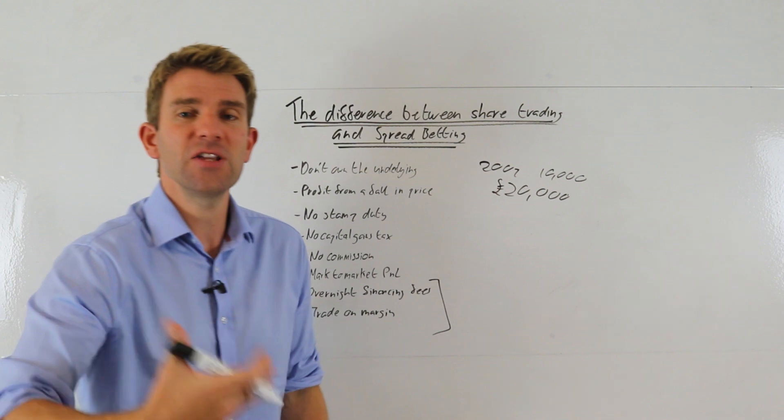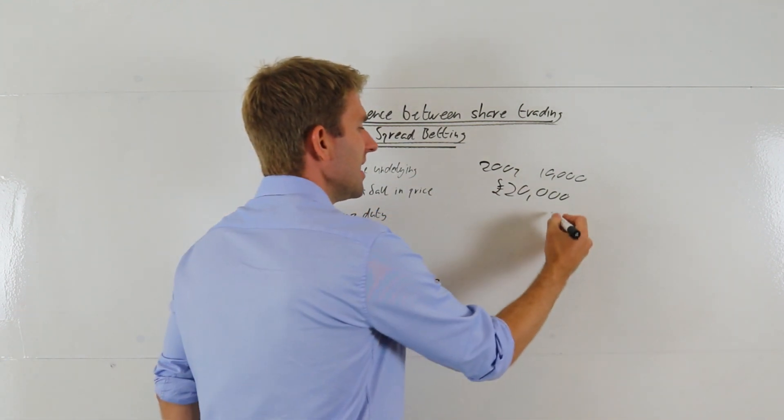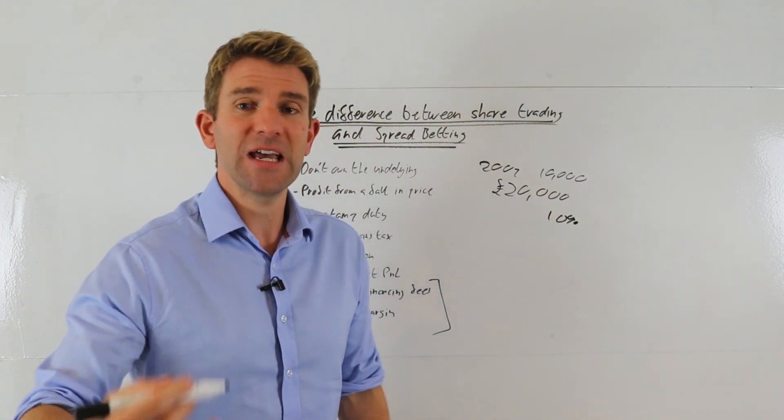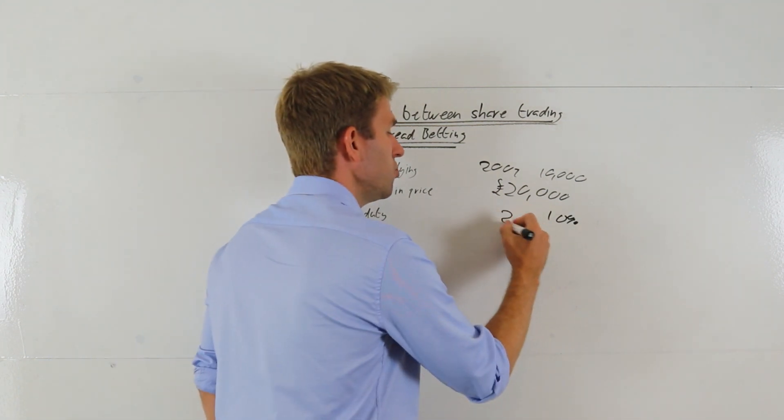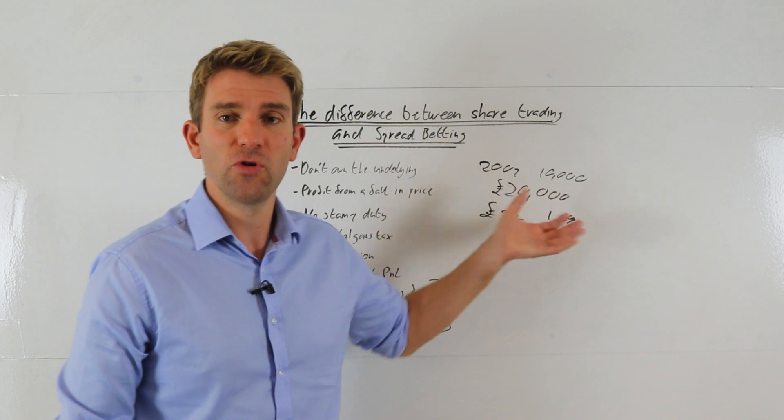Now if you're spread betting, you can trade on what's called margin, and there'll be a percentage margin depending on the share type and the instrument you're trading. But let's say it's 10% for this example. That would mean you only have to put up 10% to control that and trade. So you have to put up two thousand pounds to control twenty thousand pounds worth of notional value.